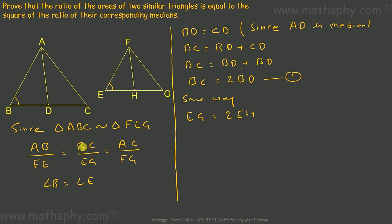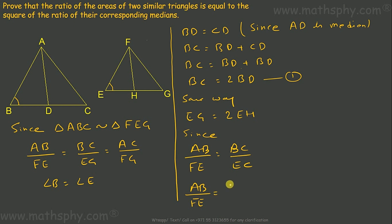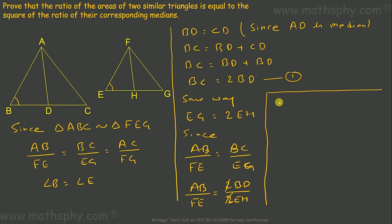Going back to where AB over FE is equal to BC over EG: since BC can be replaced with 2BD and EG can be replaced with 2EH, we have AB over FE equals 2BD over 2EH. The 2s cancel, so AB over FE equals BD over EH.